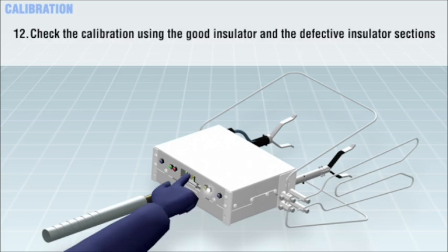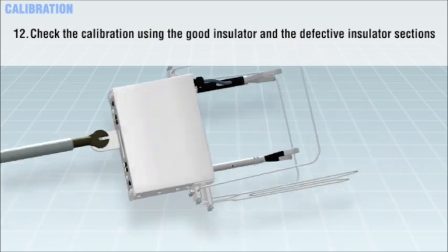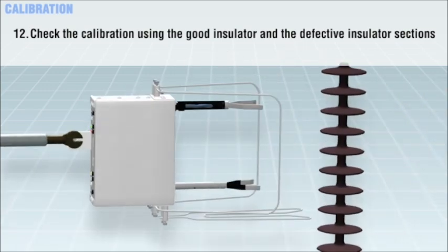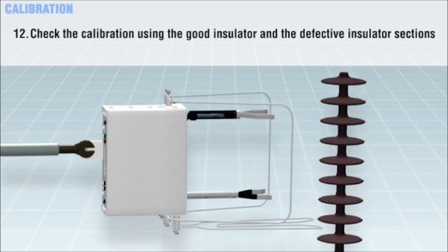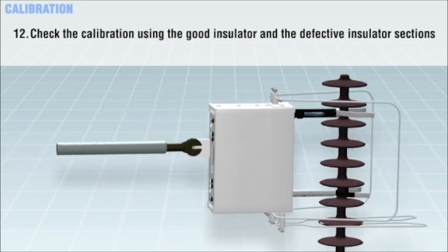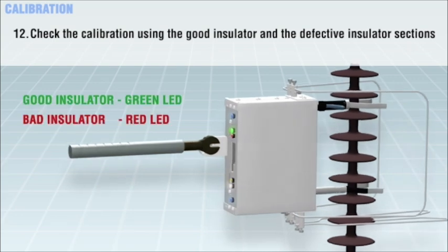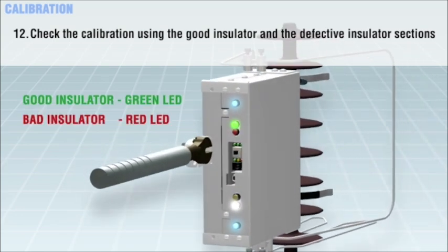Now check the calibration using the good insulator and the defective insulator section provided in the carrying case. The good insulator should provide a green LED when measured and the known defective section should result in a red reading. If this is not the case, redo the calibration. If the problem persists, contact the tool manufacturer.